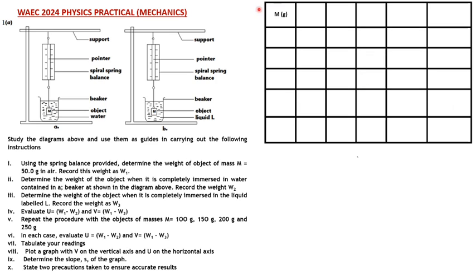I have a table that records the mass. Here I'm using masses of 50 grams, 100 grams, 150 grams, 200 grams, and 250 grams. Whatever mass you're given, you can use the same formulas. I'll record the masses to at least one decimal place. You were asked to record the weight in air, which is W1 in newtons, but I'm changing the unit to grams — so I'll transfer all these masses: 50.0, 100.0, and so on.